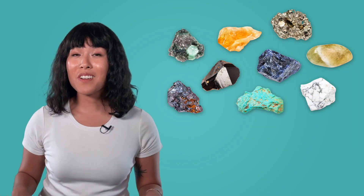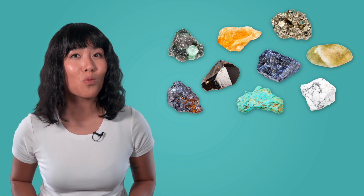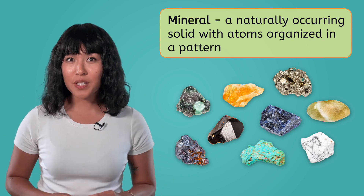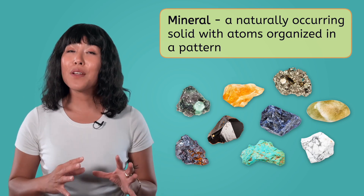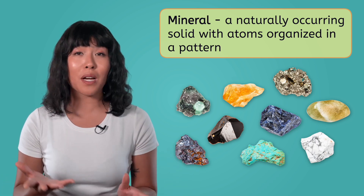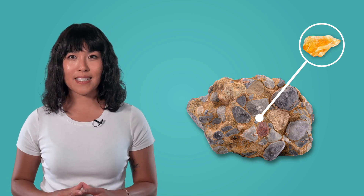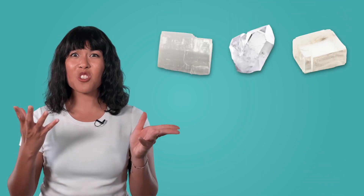Before we start identifying these minerals, let's take a moment to review just what a mineral is. A mineral is a naturally occurring solid with atoms organized in a pattern. Minerals are like the ingredients that make up rocks and crystals. So to identify a rock or a crystal, scientists need to know what minerals are in it. But how do you think they identify different minerals, especially when they look so similar? Pause the video here and record your predictions in your guided notes.